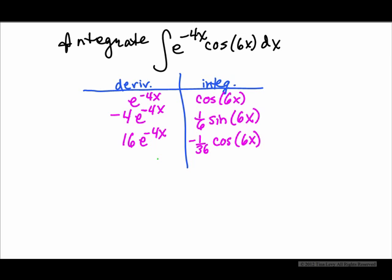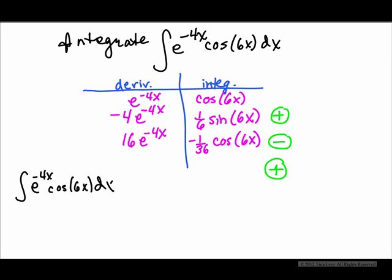We're not going to zero out on either side, but because I started with cosine 6x and I have a cosine 6x here, I'm going to stop at this point. Then I put plus, minus, and go one step down, plus. Now I write the integral of e to the negative 4x cosine 6x dx equals, and I cross multiply these to get e to the negative 4x sine 6x over 6.